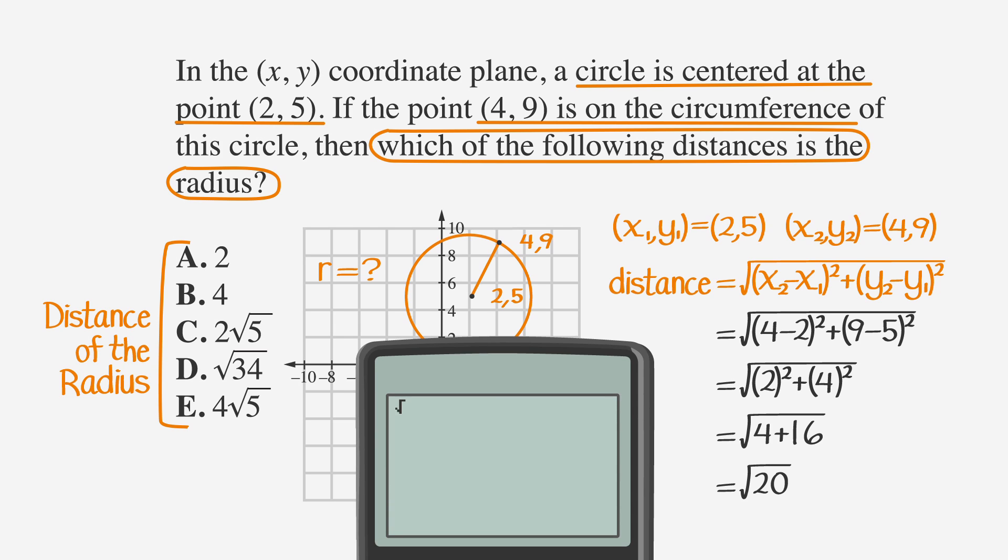Plug the square root of twenty into your calculator and you get about 4.472, which doesn't look like any of our answer choices. We can eliminate any choices that are integers because we know that our answer is not a whole number. So, get rid of A and B.